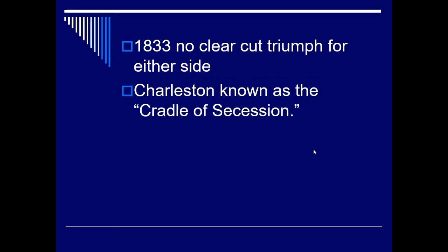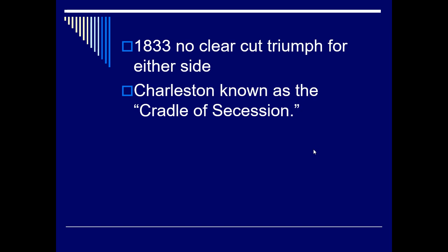In 1833, there's no clear-cut winner — not Northern industrialists or Southern farmers. But we still see the seeds of secession. In fact, Charleston, South Carolina is called the cradle of secession. How Jackson deals with the nullification crisis and with Native Americans will determine whether he gets reelected. Andrew Jackson is seen as a champion of the common man — he extends democracy and gets a lot of support from his new Democratic Party from the non-elite.